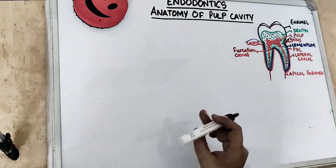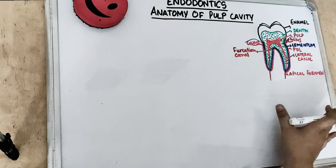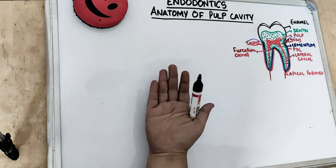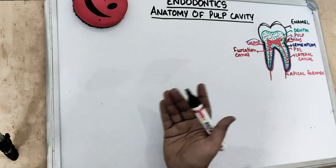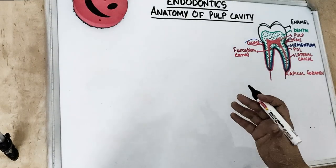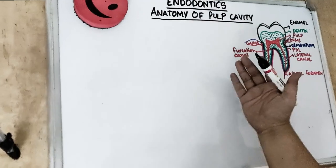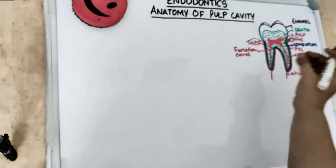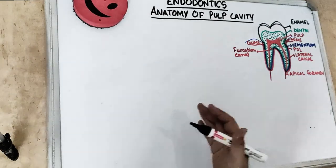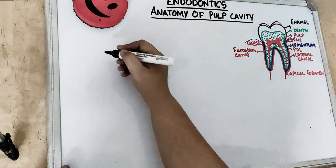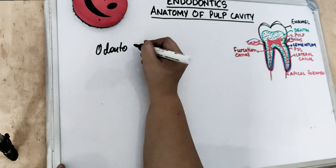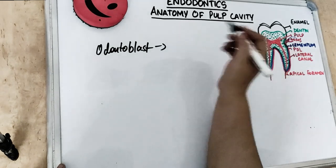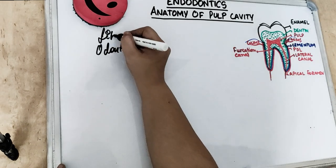The pulp contains fibroblasts and odontoblasts. Fibroblasts are the main component — they are the cells which form collagen. Odontoblasts are the cells which form dentine. Odontoblasts actually lie in the pulp but they form the dentine. So the pulp contains fibroblasts which form collagen and also contains odontoblasts which form dentine.